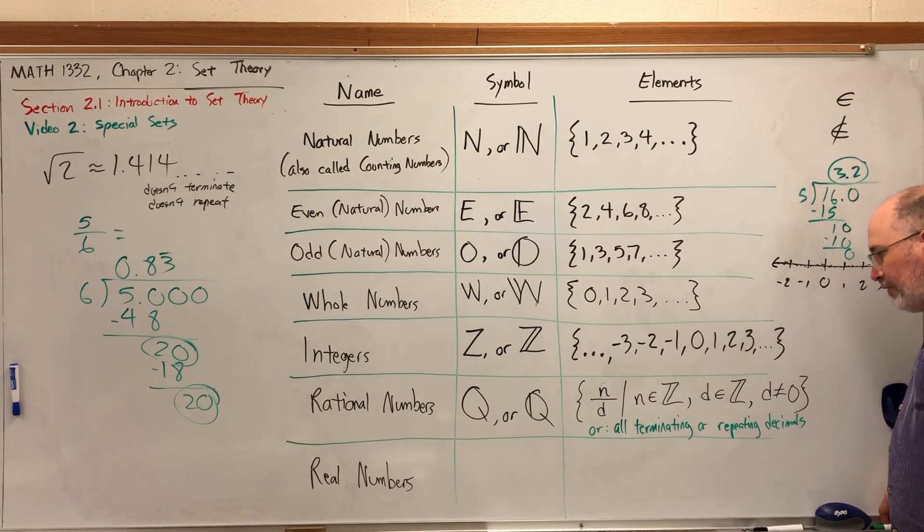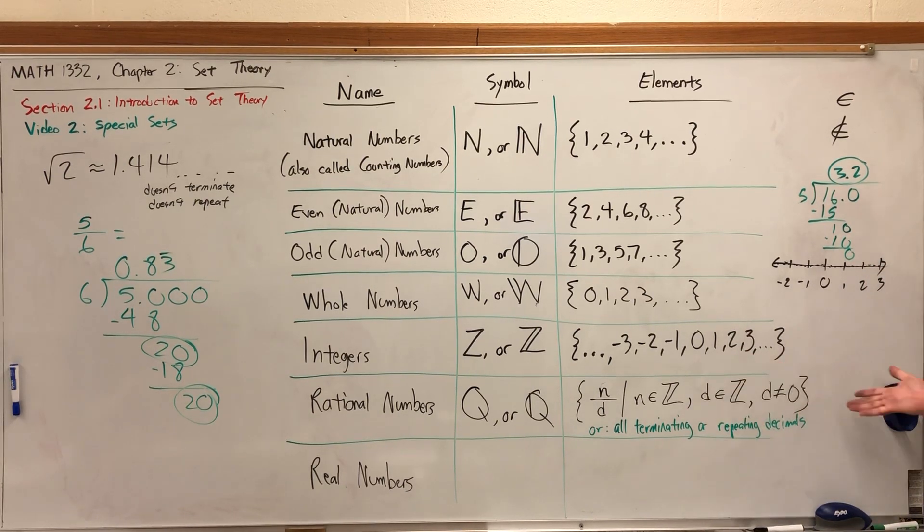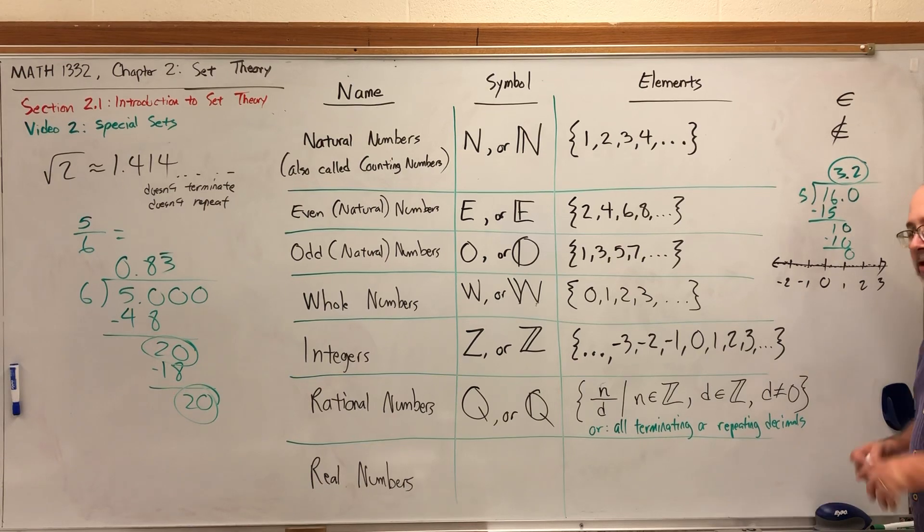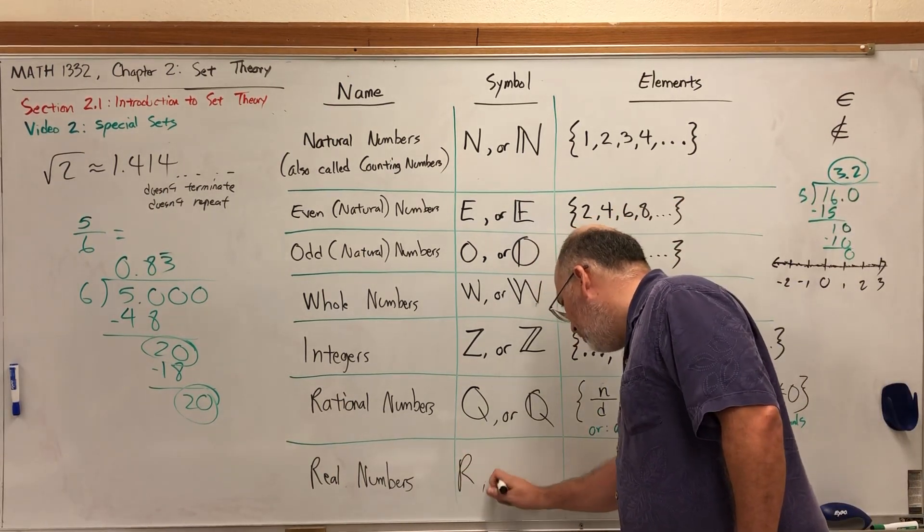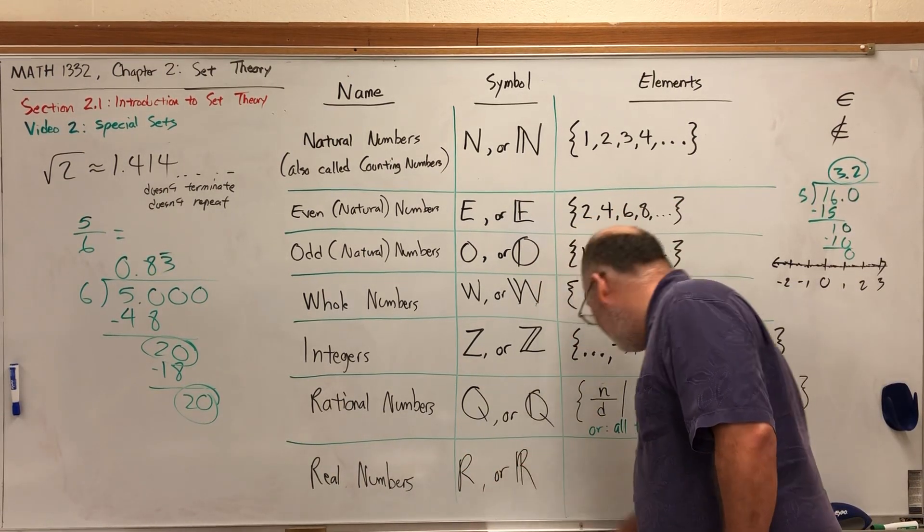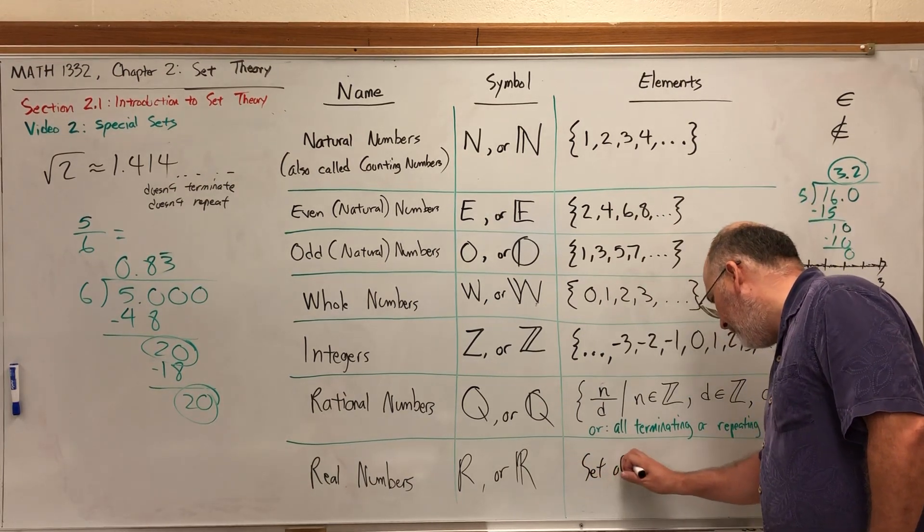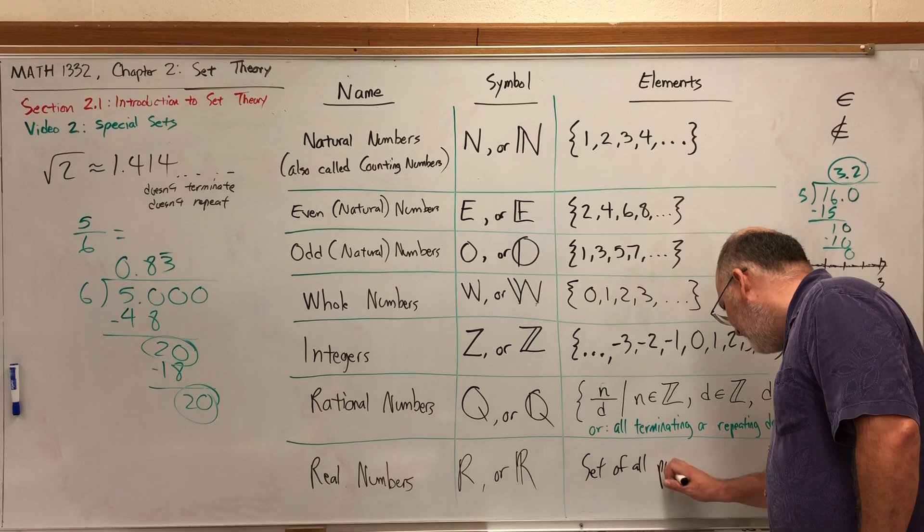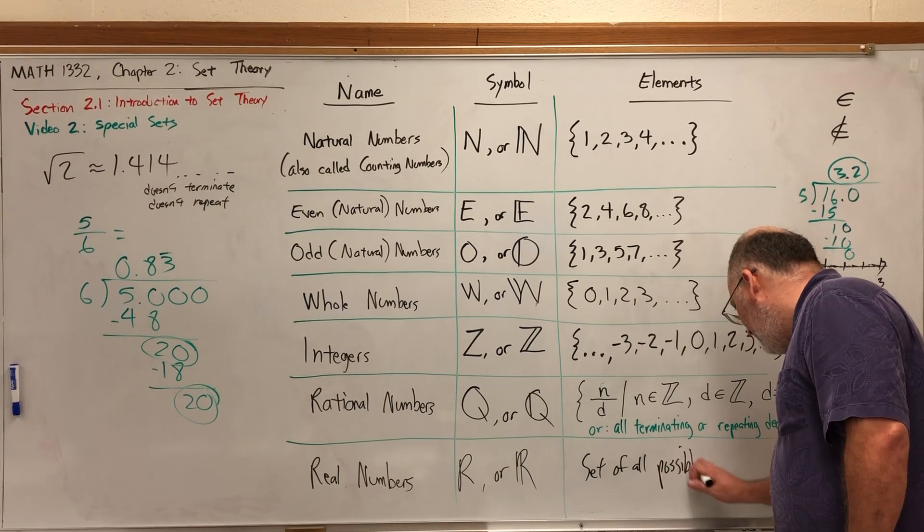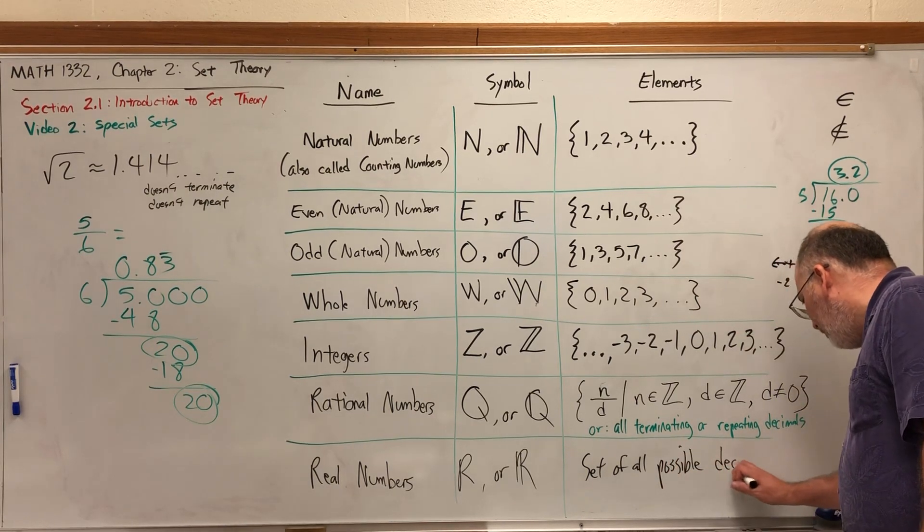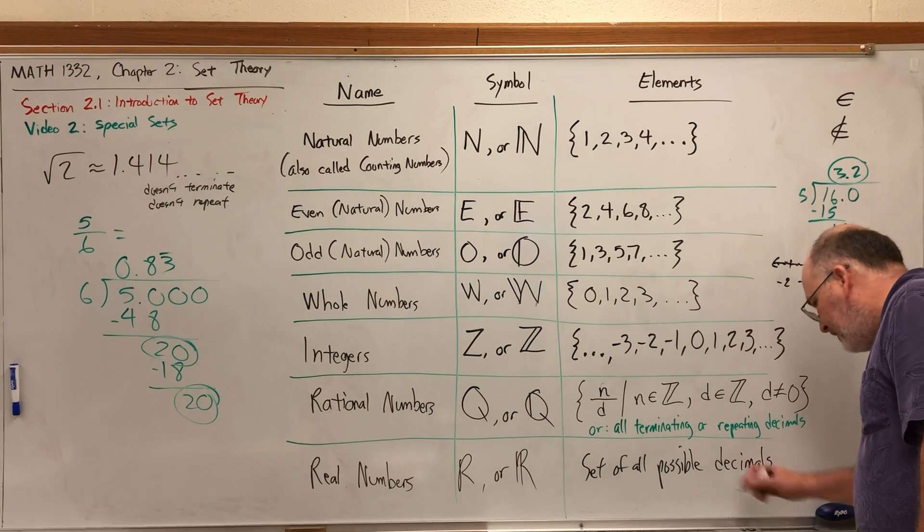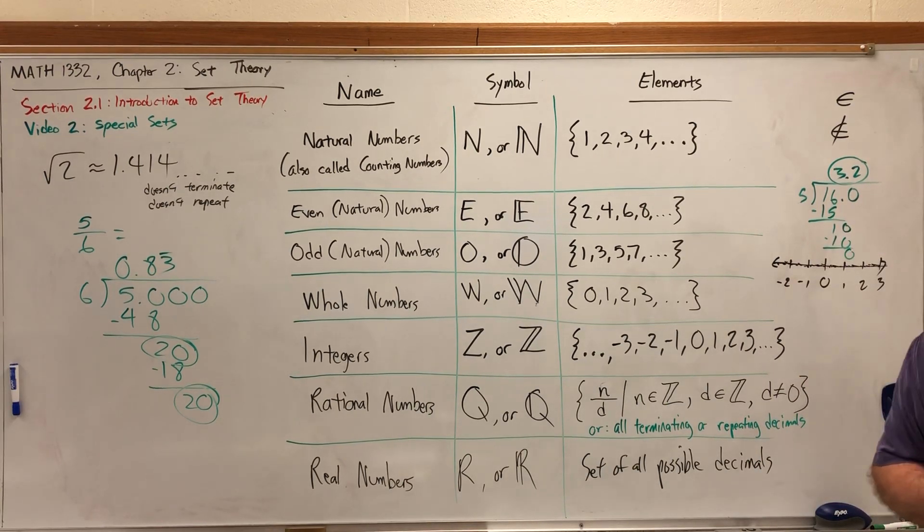If we throw those missing decimals into the rational numbers, we get what are called the real numbers, which completes this number line. The real numbers, whose symbol is a capital R or a double script R, we can describe as the set of all decimals, all possible decimals. There's a much more rigorous definition of the real numbers, but it is way beyond the scope of this course.